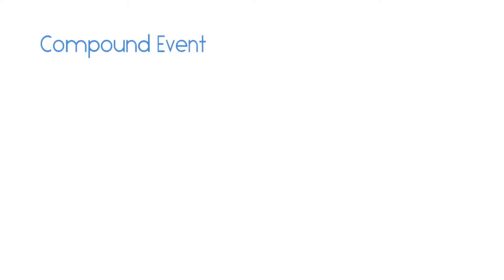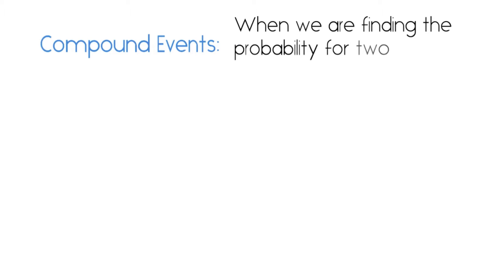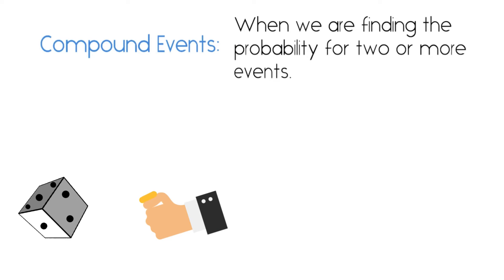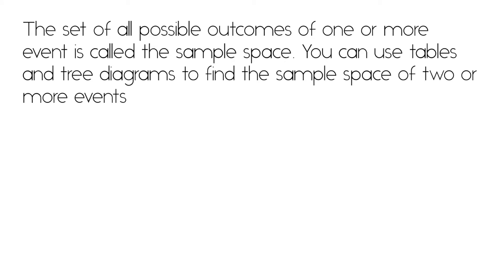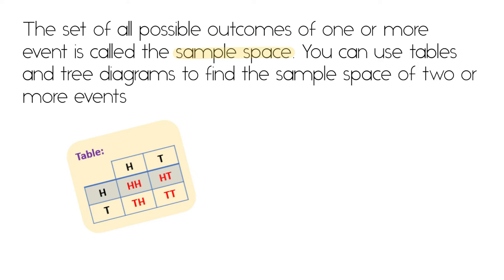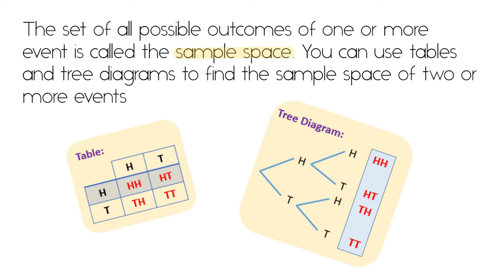Compound events is when we're finding the probability for two or more events. So for example, rolling a dice and flipping a coin, or rolling two different dice. The set of all possible outcomes of one or more events is called the sample space, and you can use tables and tree diagrams to find the sample space of two or more events.